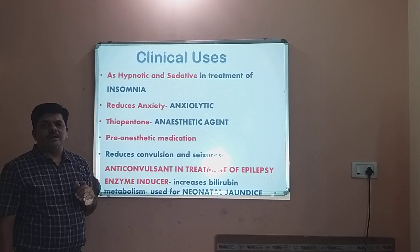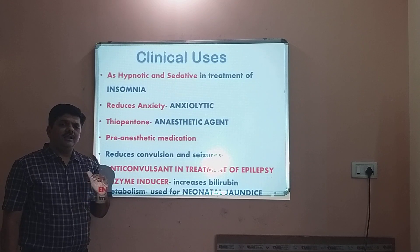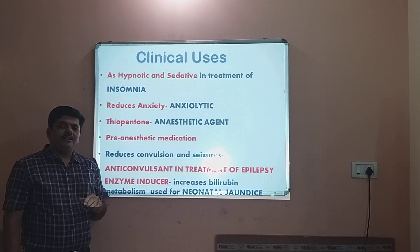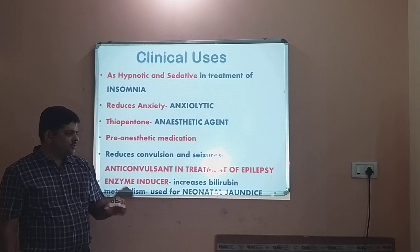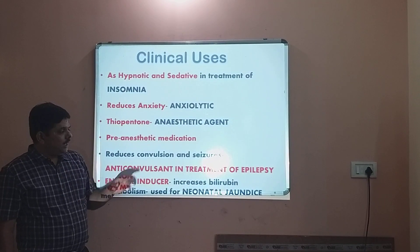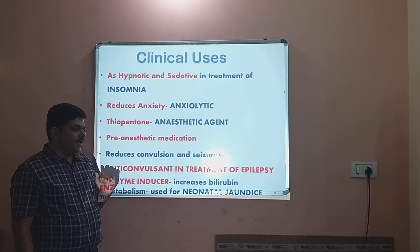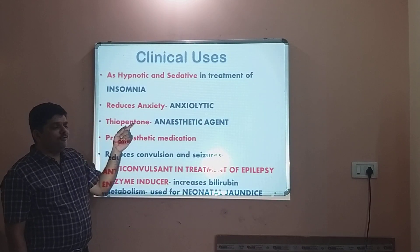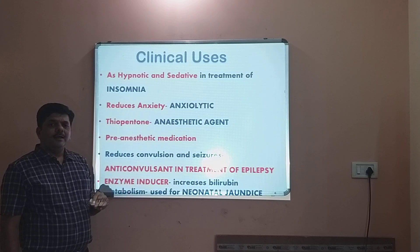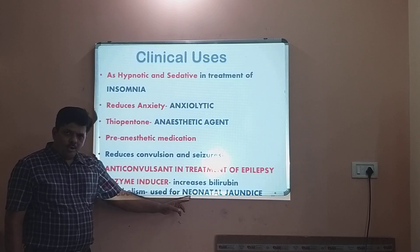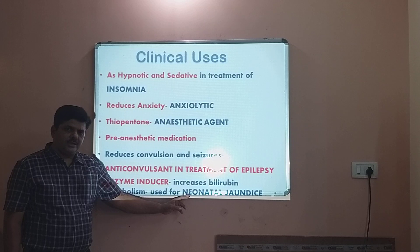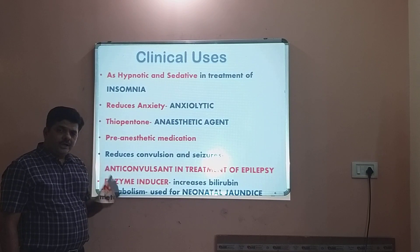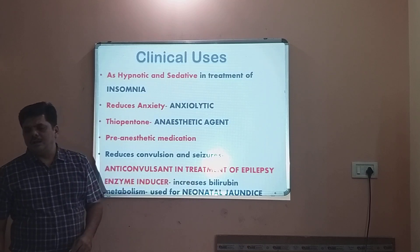Barbiturate is used in the treatment of epilepsy — particularly phenobarbitone, which is widely used as an antiepileptic because it can control convulsions and seizures. When a child is born prematurely, there is increased bilirubin, a condition called neonatal jaundice. In early childhood, hepatic metabolism is very low and bilirubin cannot be metabolized. But phenobarbitone, being an enzyme inducer, increases the metabolism of bilirubin, so in certain cases phenobarbitone is used in treatment of neonatal jaundice.